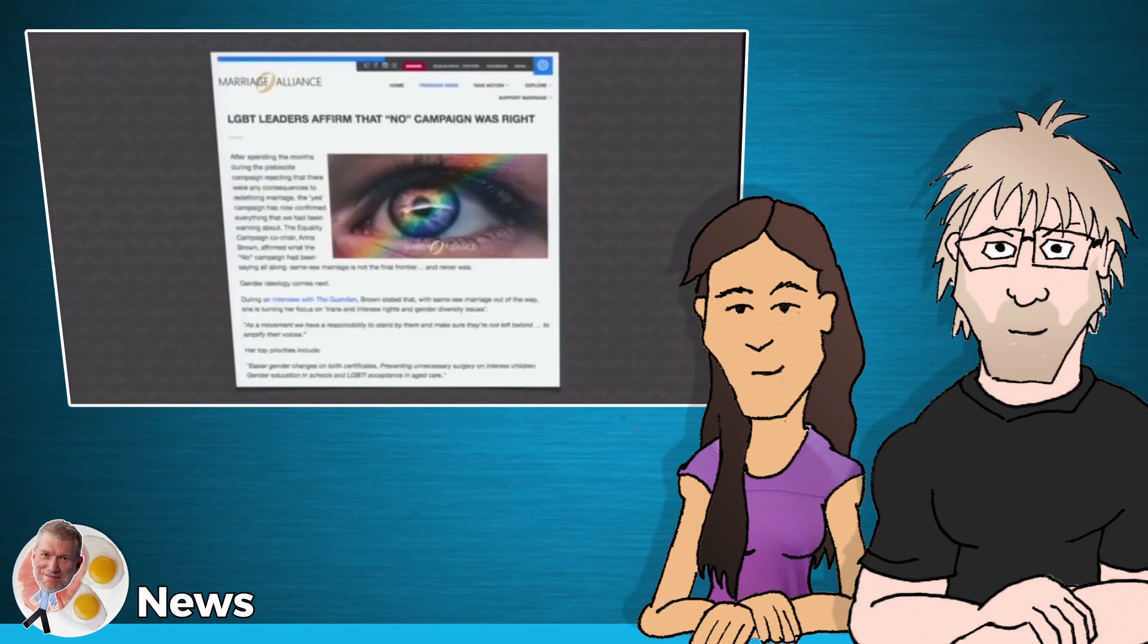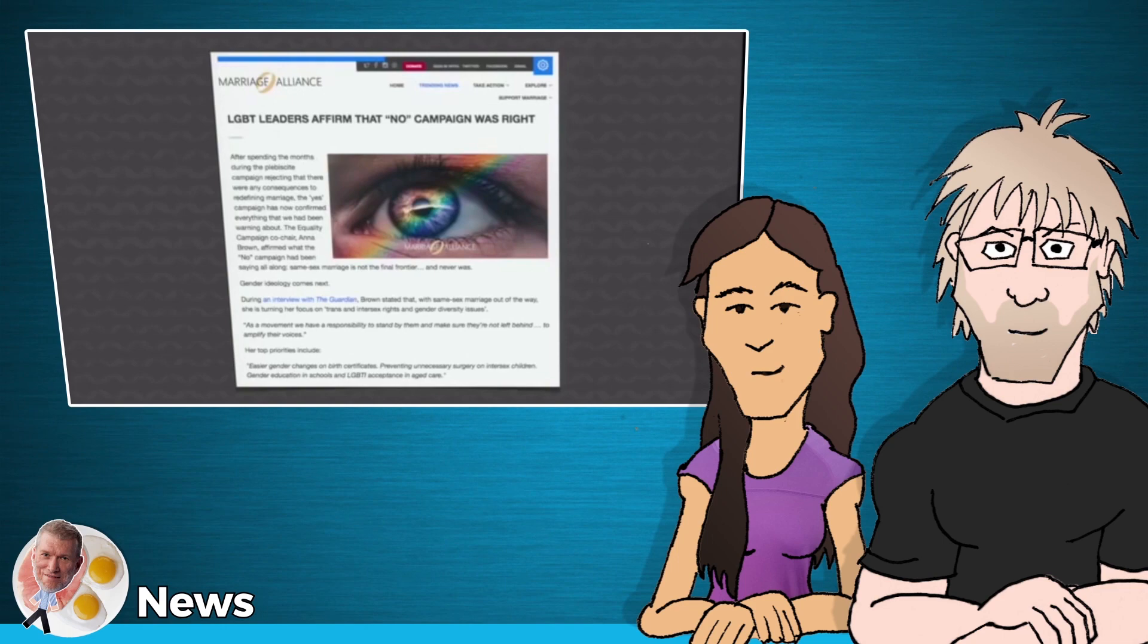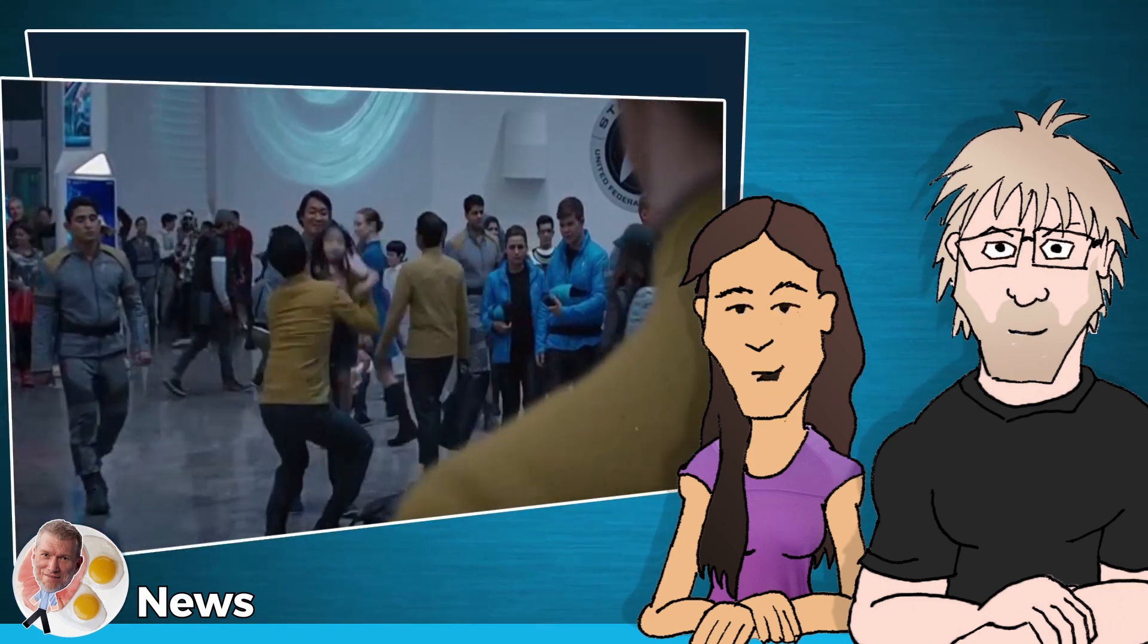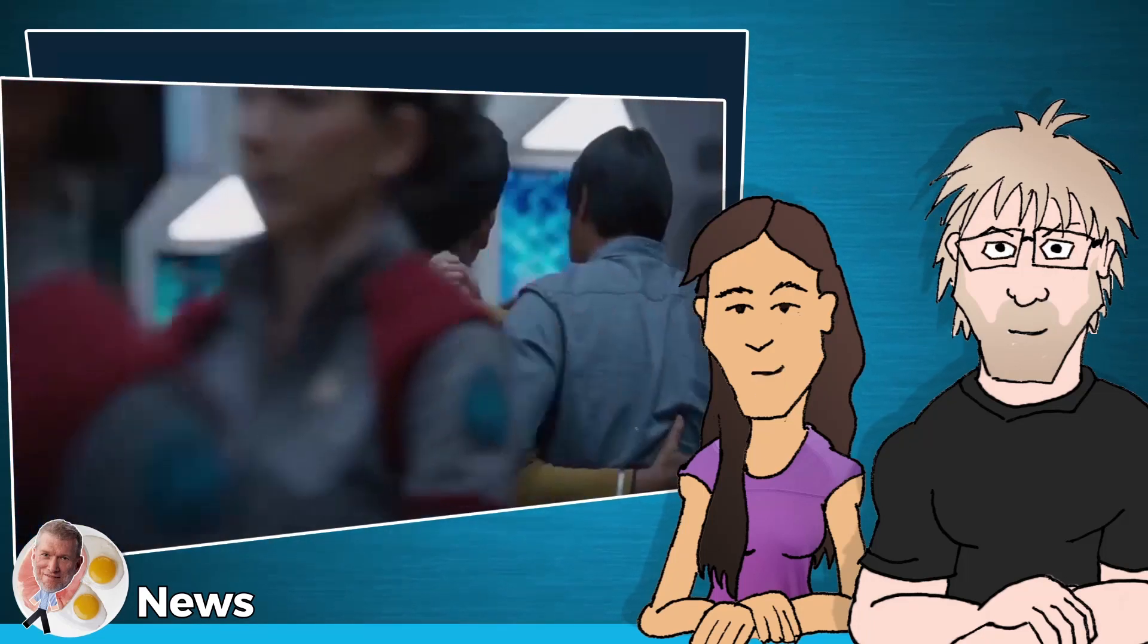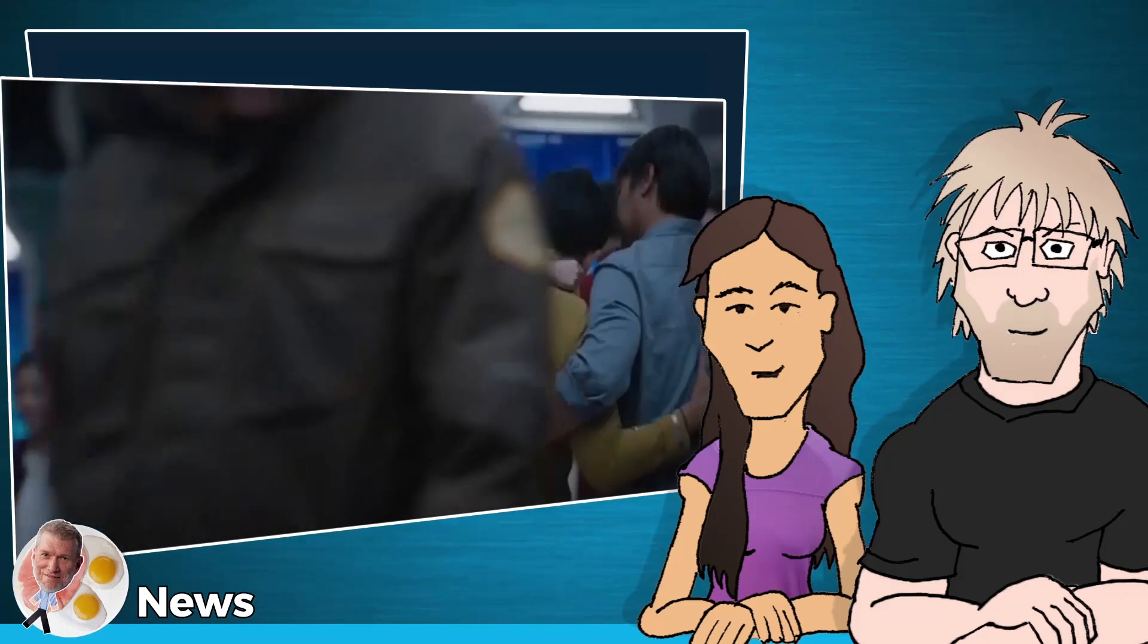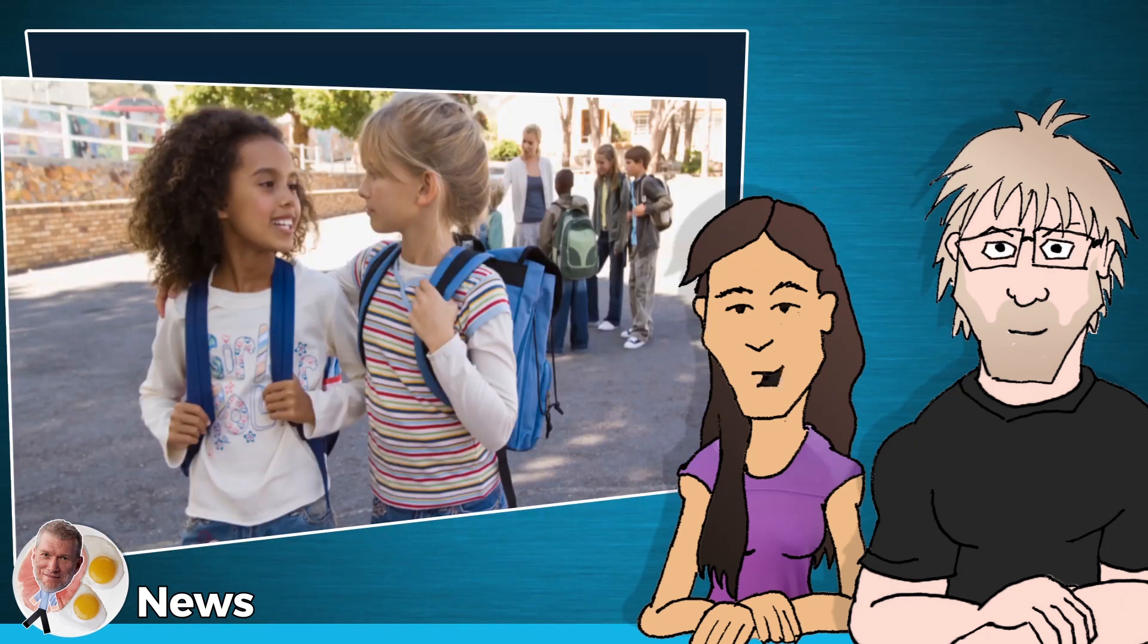This one comes out of Australia. LGBT leaders affirm that no campaign was right. The LGBT activists are going to go after gender next, and it's going to just destroy the family unit. It's going to break things down. If all it takes is one gay to ruin your day and ruin your family life, I feel like you have much bigger problems than someone liking someone of the same sex, but that's just my personal opinion. Same-sex marriage out of the way. She's now turning her focus on trans and intersex rights and gender diversity issues. They're talking about getting all this stuff into schools. Forcing unsuspecting children to be empathetic to people who may not necessarily hold the same views as them is detrimental to society. This is a proven fact, and I don't need any sources for it.